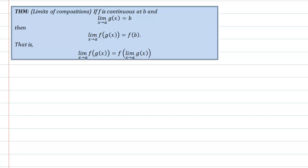Today we are going to do another proof in differential calculus. This proof is for limits of composition — what happens as we take the limit as x approaches a of a function composed with another function. The theorem says that if f is continuous at some value b, and the limit as x approaches a of g(x) equals b, then the limit as x approaches a of f(g(x)) equals f(b).